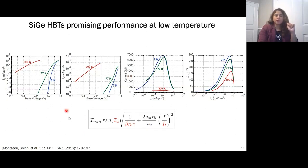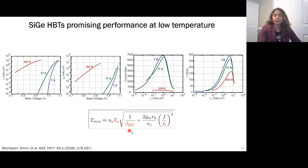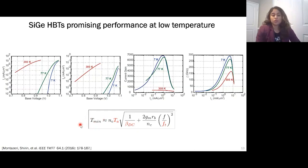Why do these matter? Looking at minimum noise temperature as a function of β_DC (current gain), fT (unity gain frequency), and TA (ambient temperature), when we reduce the temperature, the ambient temperature decreases, β improves, and fT improves. As a result, the minimum noise temperature from these devices should improve significantly, making them a very good candidate for low-noise amplifier design at cryogenic temperature.